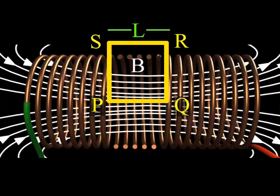Therefore, the paths QR and SP will not contribute to the line integral of magnetic field B. The total number of turns in length l is equal to n into l.